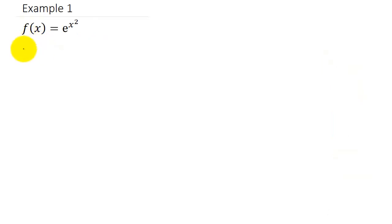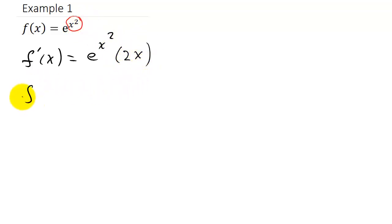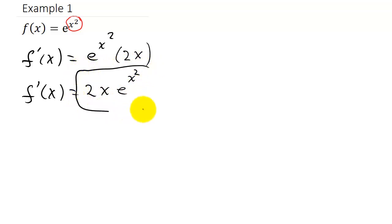In the first example, f prime of x is equal to — this is my e to the u, and u is x squared. So that's e to the x squared times the derivative of the exponent, which is 2x. So I'm going to write this as 2x times e to the x squared. And there's my derivative.